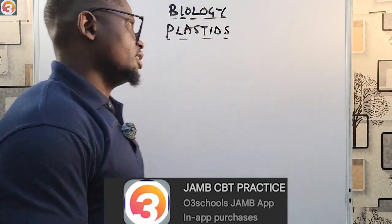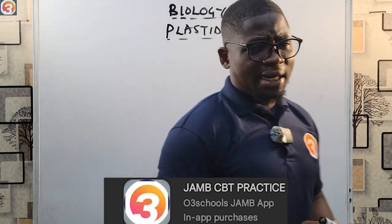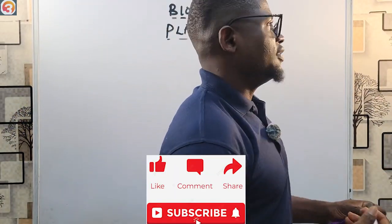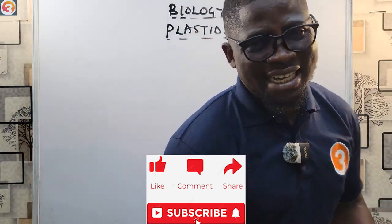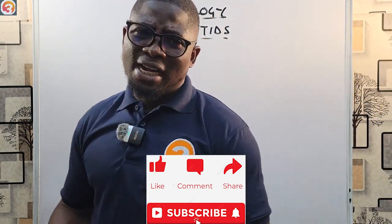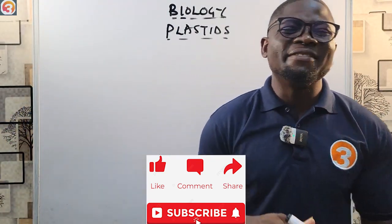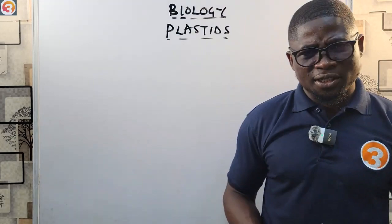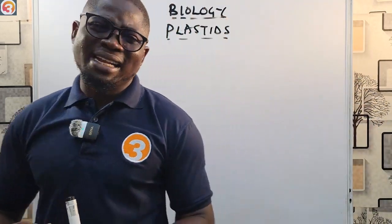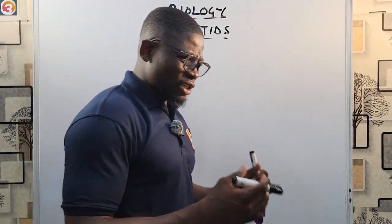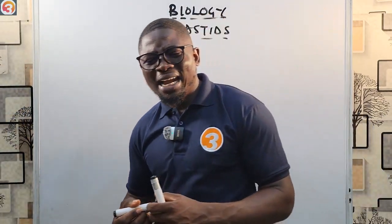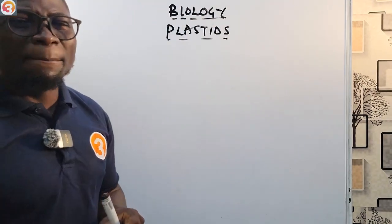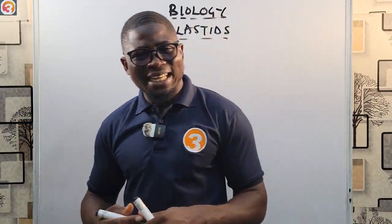So we're going to look at plastids. If you haven't liked this video, please do so, subscribe to the channel, and keep sharing. Plants eat, drink, breathe, and grow just like us, but in different ways. One category of specialized organelles that plants use to survive is what we call plastids. Plastids are double membrane-bound organelles found in plants.